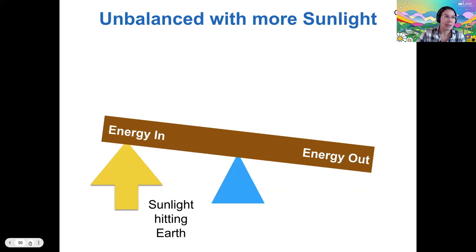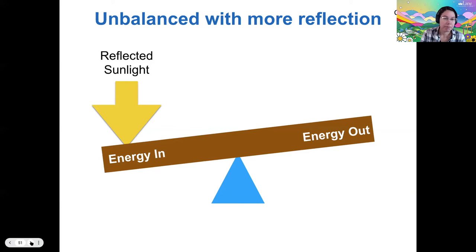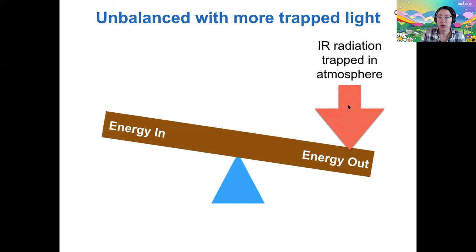For example, if the sun suddenly got way brighter and there were more sunlight hitting Earth, then we'd have more energy in than energy out. Or consider if there's a lot more reflection — like if the entire surface of the Earth were covered in snow and the oceans froze over — the albedo would go up, the reflected sunlight would be larger, and that would decrease the amount of energy in. If the Earth was radiating more infrared because it reached a higher temperature, we would have more energy out than energy in. And if we have more infrared radiation trapped in the atmosphere, that would decrease the energy out — there would be more energy in.